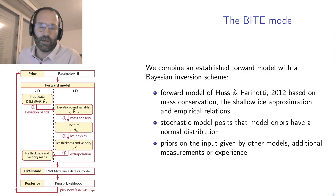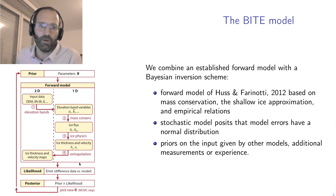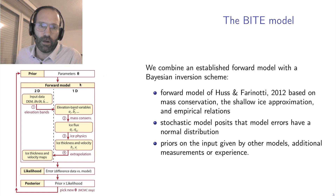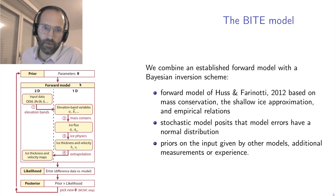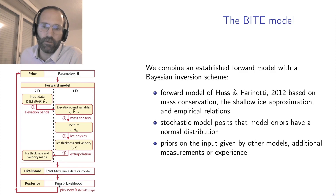I recoded this forward model in Julia, and then put it into a stochastic Bayesian framework. This meant coding up a likelihood function, which essentially captures the difference between data and model — I assume normally distributed errors of the data versus the model. You also need a prior, which is prior information you know on your parameters. For instance, one parameter is how much snowfall there is. Once you have that, you can calculate the posterior, which is the prior times the likelihood, and put the whole thing into a Markov chain Monte Carlo method to actually estimate the parameters.